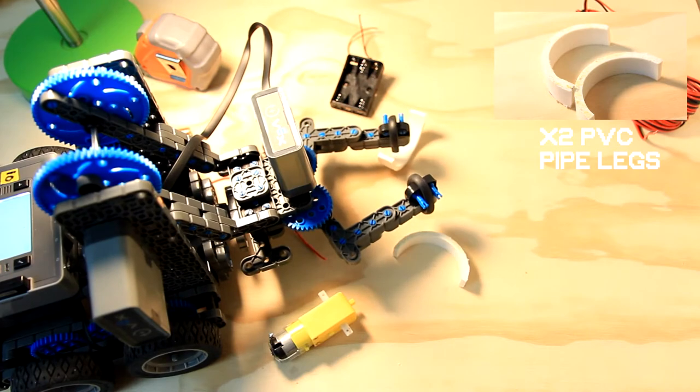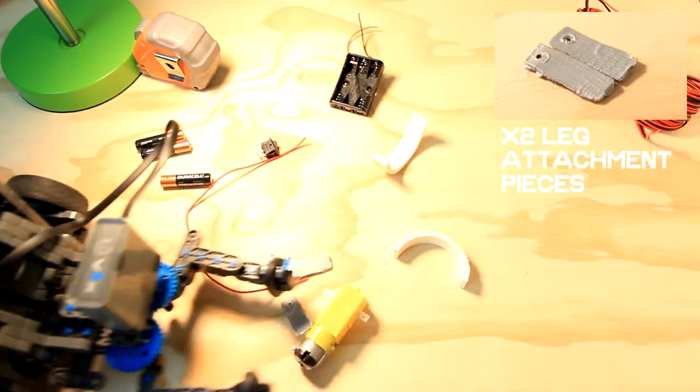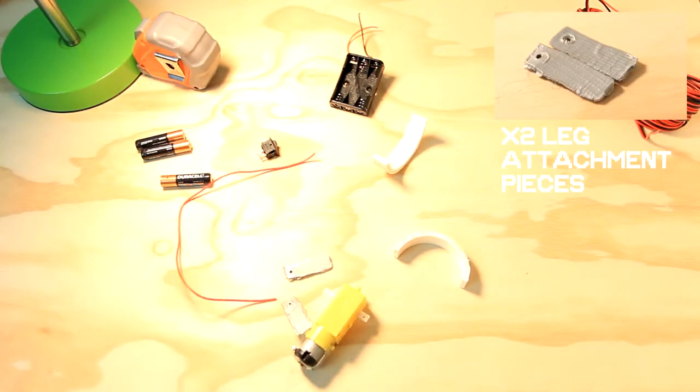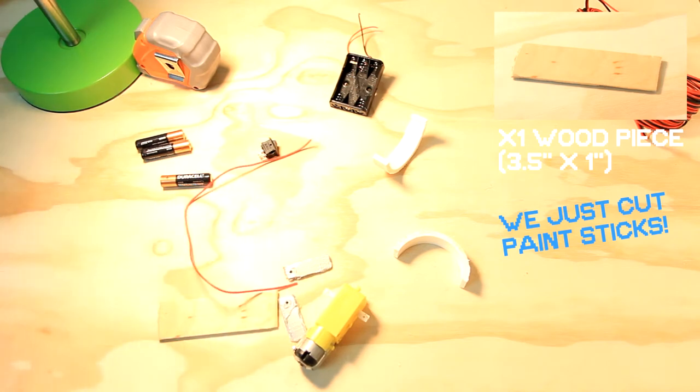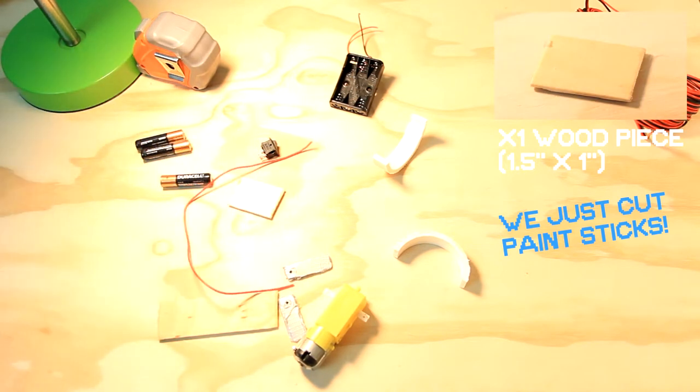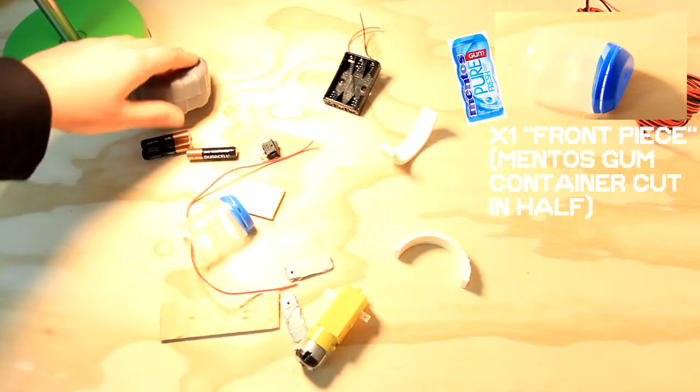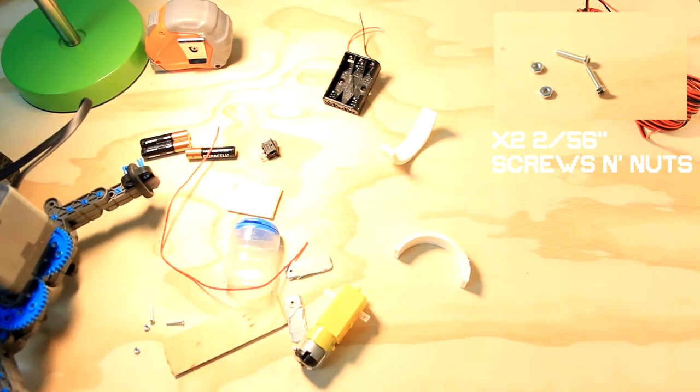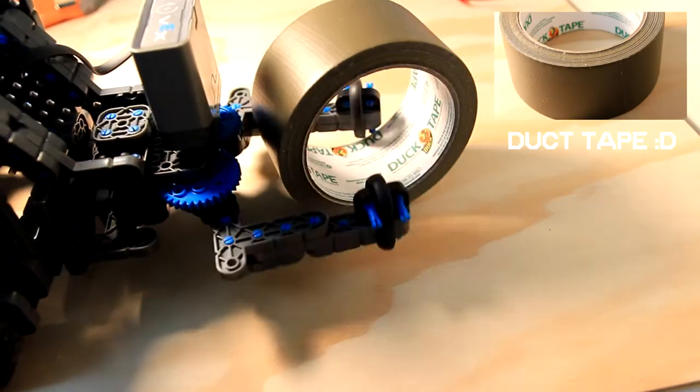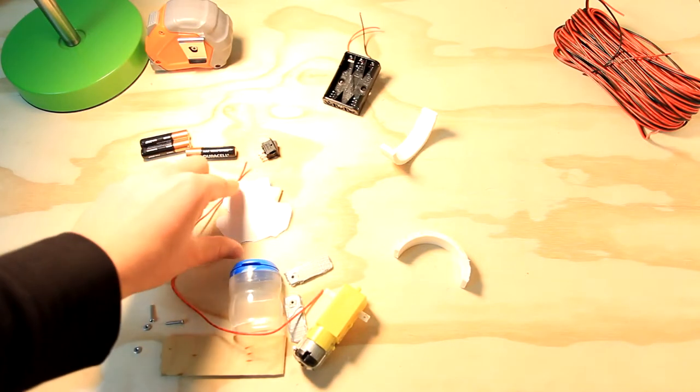You're going to need two PVC pipe legs, two leg attachment pieces which we've made out of aluminum and duct tape, one wooden thing that is long and one wooden thing that is short, a front piece - this is half of a small Mentos gum container, you're welcome - two 2.56 inch screws and nuts, a roll of green duct tape, and one toad soul increasement charm.